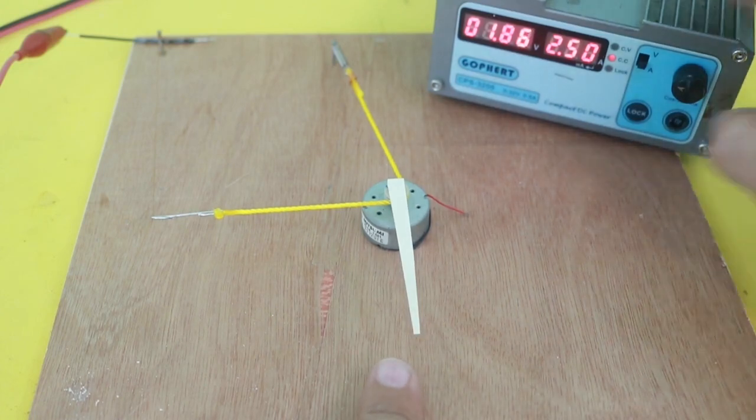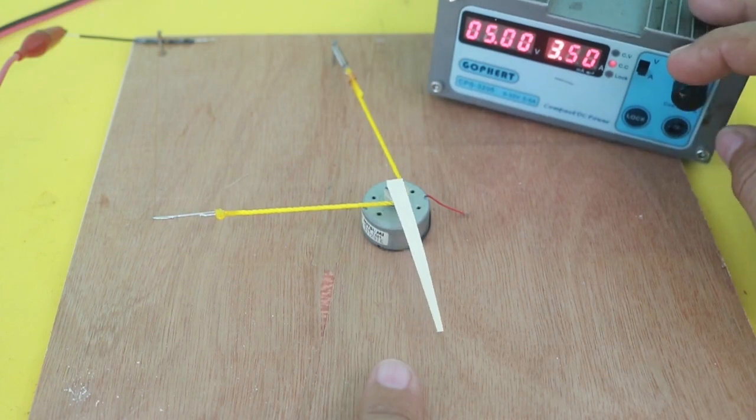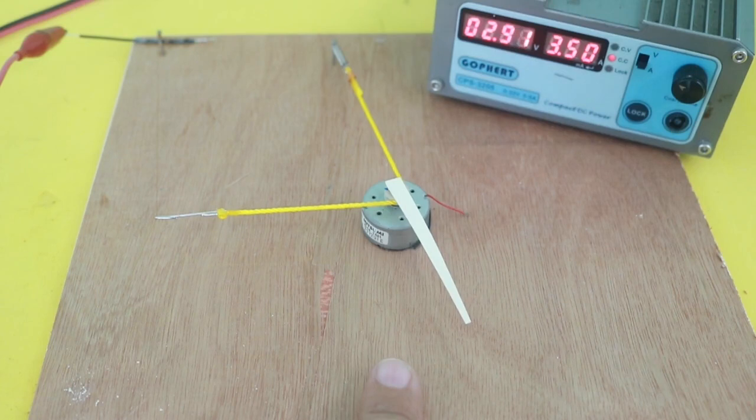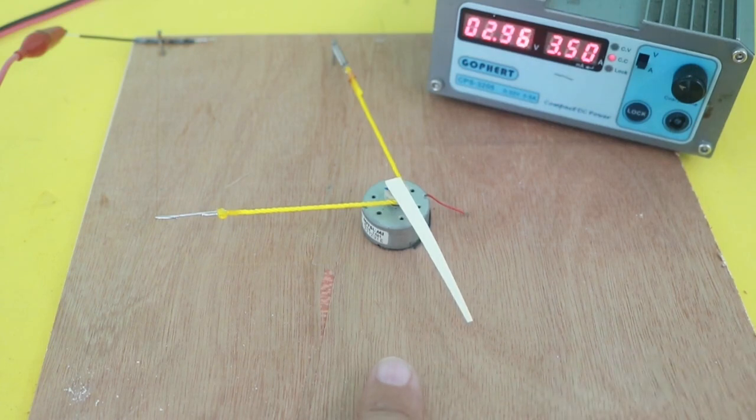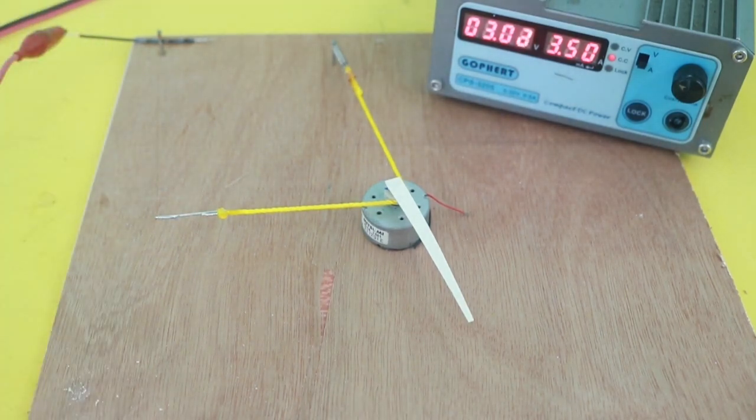If we increase the current, for example, 3.5 amps, the needle moves further to the right. Of course, it is slow to respond because it takes time for the heat to act on the wire.